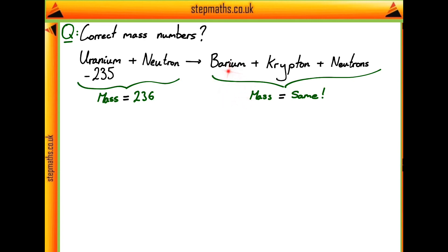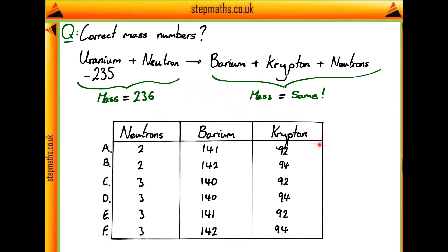Now since we know that, we know that the mass of these three things together is going to be 236 units. We can just look at the table of solutions we were given and try to find out which of these correspond to 236, and see if that eliminates any and makes our question easier. If we go through and add together the number of neutrons, the atomic mass of barium and krypton in each row, we get these totals.